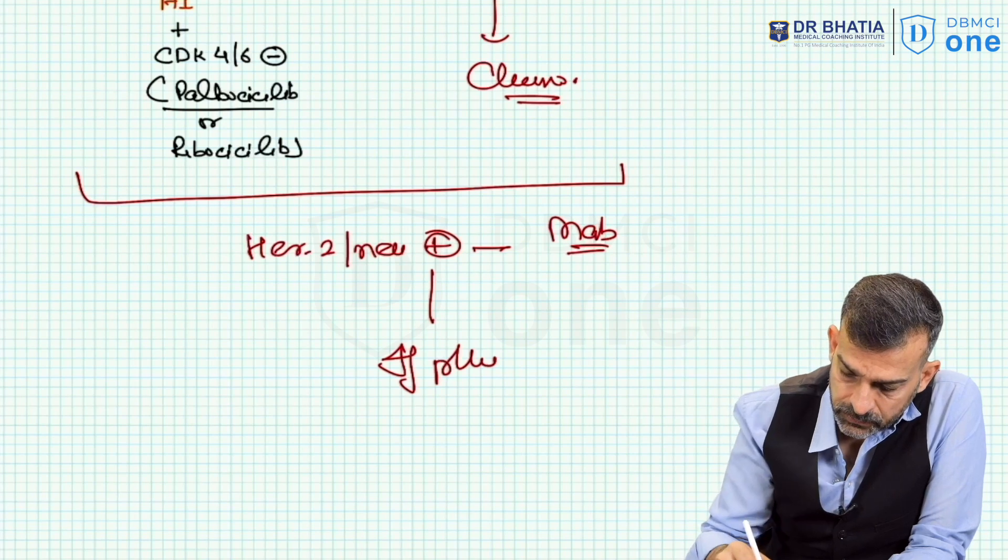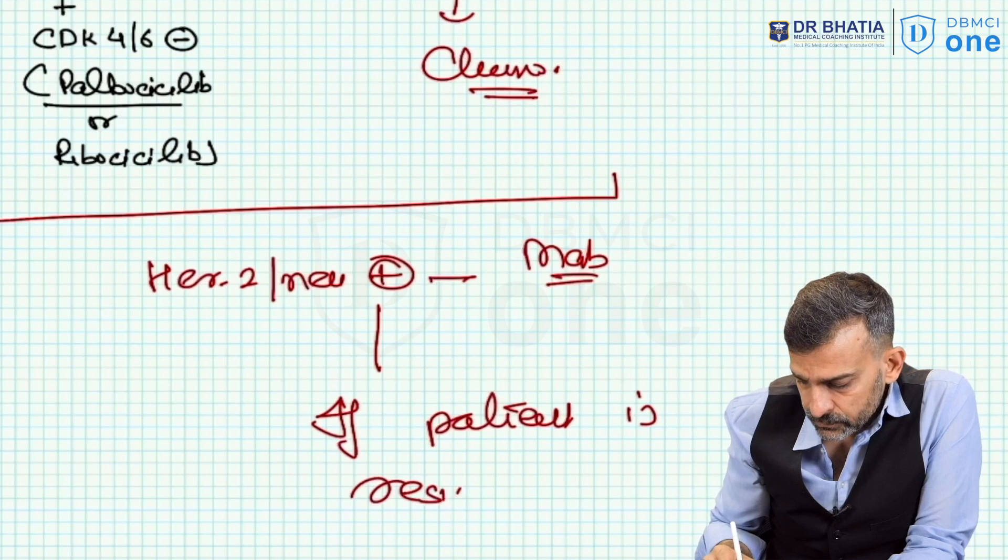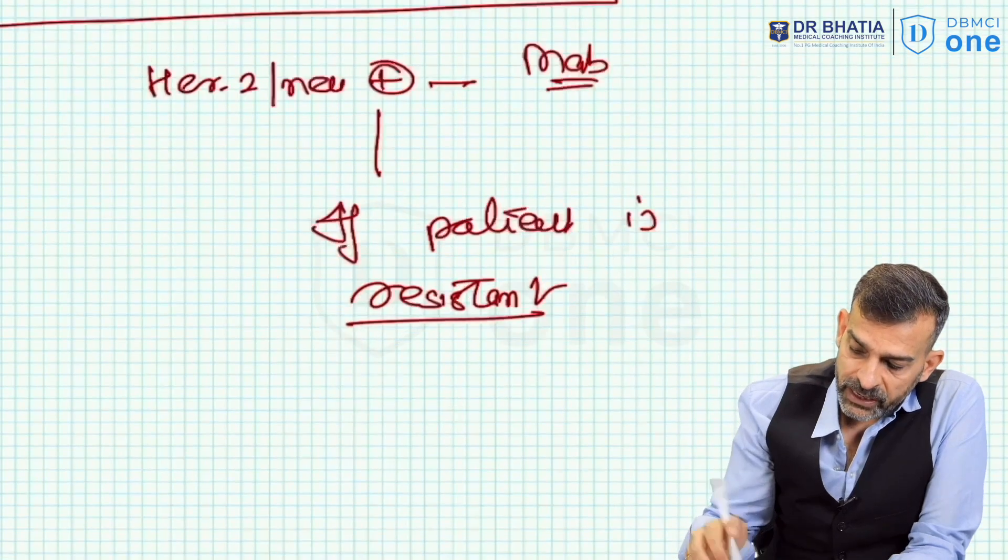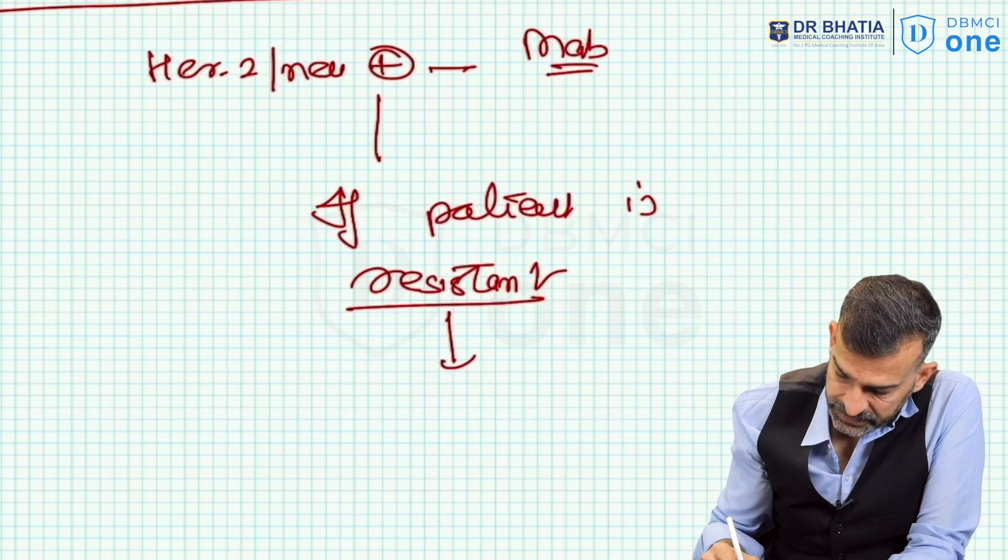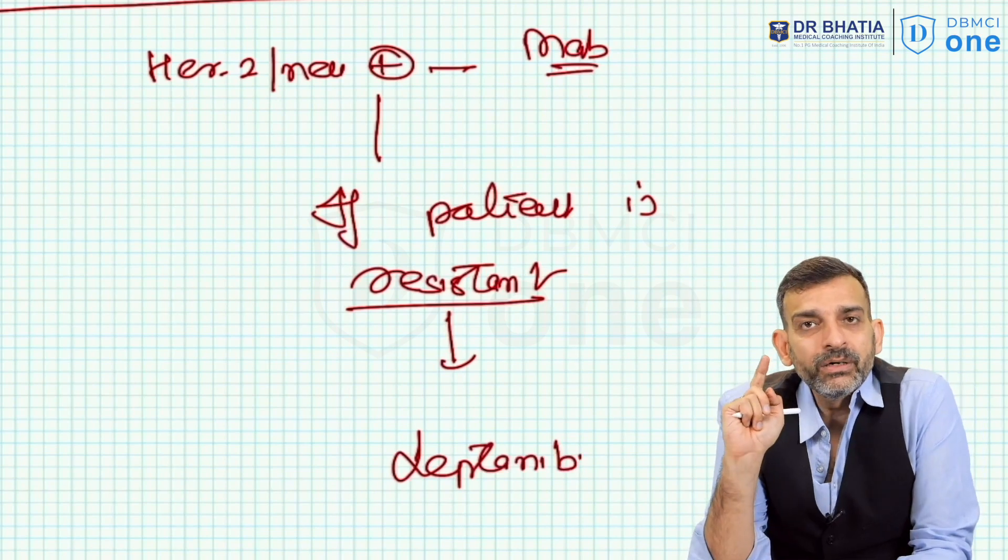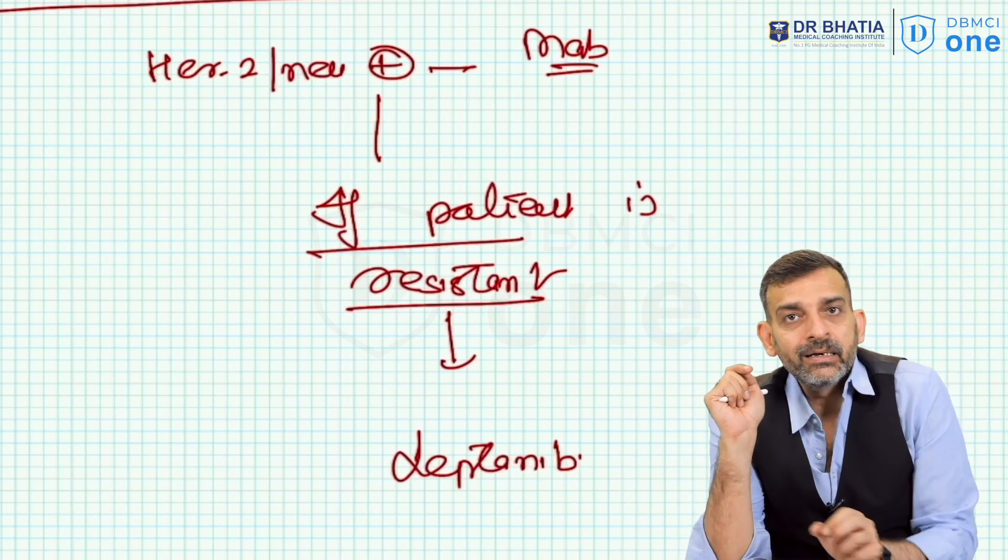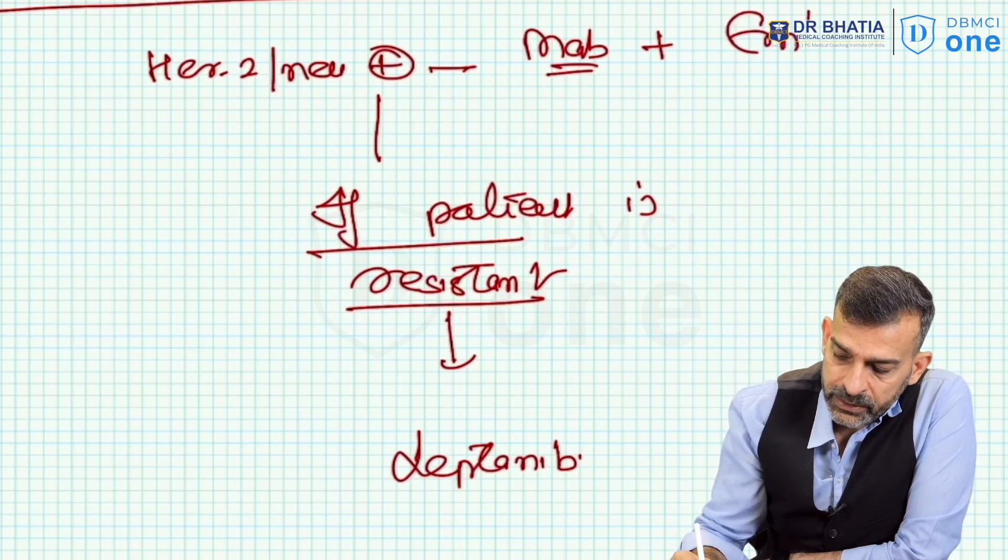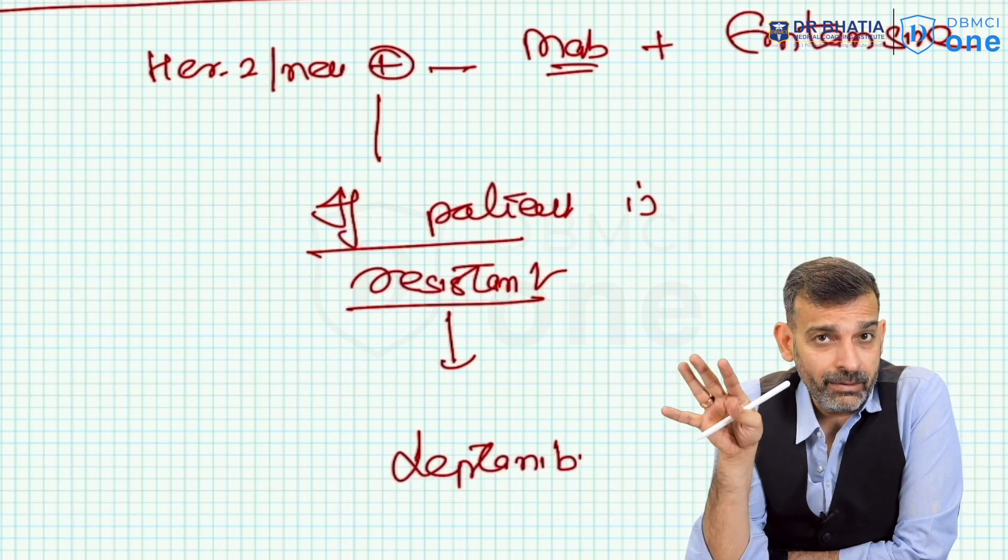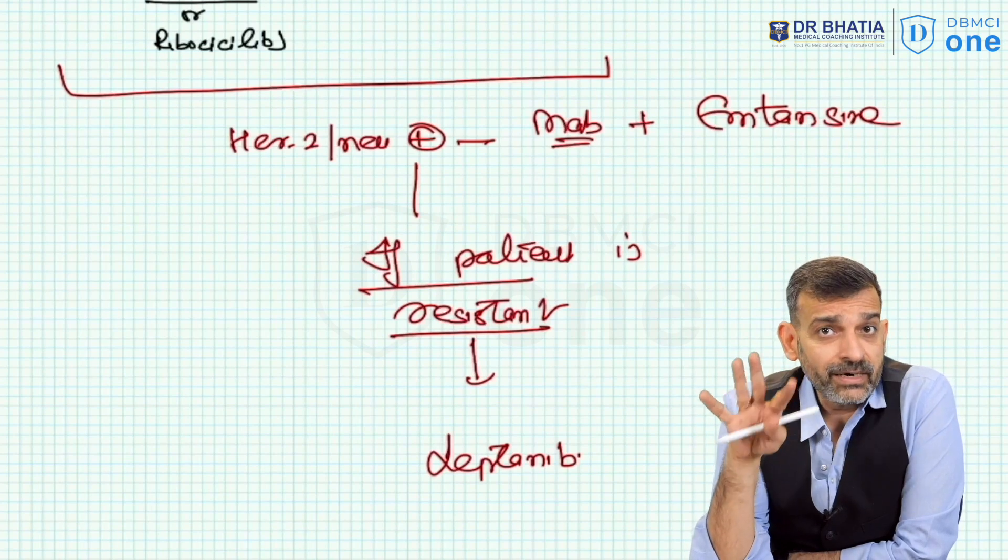If the patient is resistant to monoclonal antibody, that is trastuzumab and pertuzumab, then we may need to replace it with a newer drug called lapatinib. So monoclonal antibody, along with that we add emtansine. Please correct that in our previous discussion also where I probably said M-M-N-C, it is emtansine. So this is the treatment of advanced breast cancer.